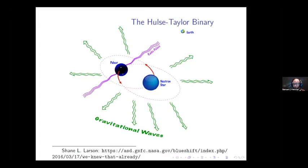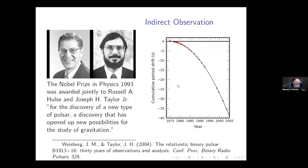One of the predictions of general relativity is that in a system like this, the orbits of the two binary objects will ever so slightly start to come together — the orbital periods will start to decrease. This is usually attributed to the emission of gravitational waves. The observation of this decrease in period for the pulsar was the source of the Nobel Prize in Physics in 1993, awarded to Russell Hulse and Joe Taylor. The agreement between observation and general relativity's theoretical prediction is remarkable.